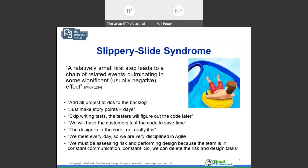A quick reference to the slippery slide syndrome: Wikipedia offers a good definition — a relatively small first step leads to a chain of related events culminating in some significant, usually negative, effect. Here are some examples of how an agile team could start off on a slippery slope without even knowing it, and bit by bit that becomes a habit or a chronic issue on their team.